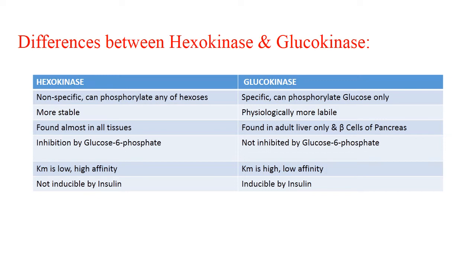Differences between hexokinase and glucokinase: hexokinase will phosphorylate any hexose, whereas glucokinase is specific and can phosphorylate glucose only. Hexokinase is more stable, whereas glucokinase is physiologically more labile. Hexokinase is found in almost all tissues, whereas glucokinase is found in adult liver and only in beta cells of the pancreas.